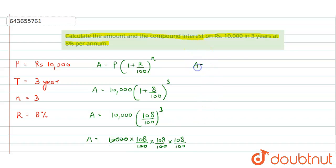Finally, we get Amount = (108 × 108 × 108)/100.